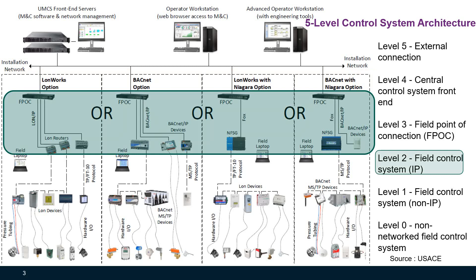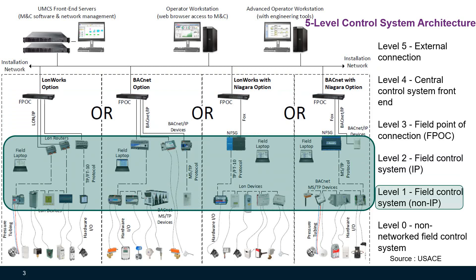At level two, the field control system or IP network level, you'll see these terms: LonIP, BACnet IP, or FOX. And at level one, field control system non-IP network, you may see these terms: TPFT-10 or MSTP.